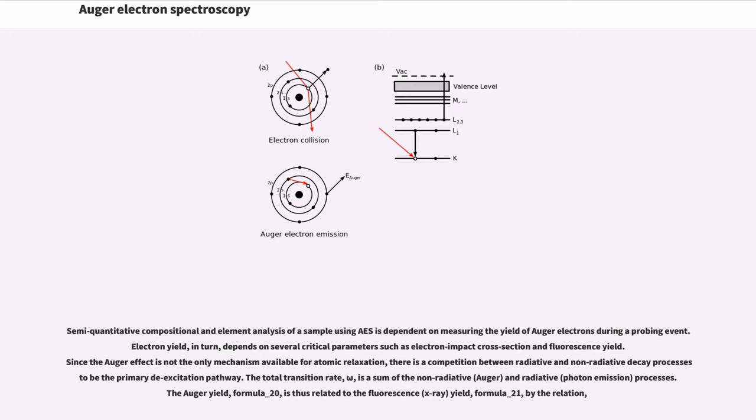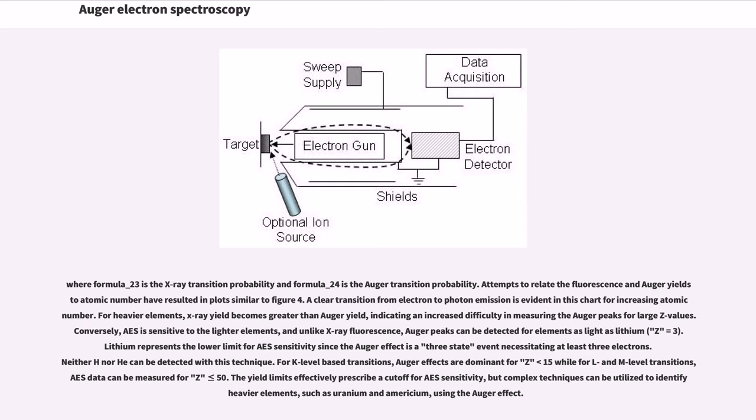The Auger yield, a_A, is thus related to the fluorescence (X-ray) yield, a_F, by the relation a_A = 1 - a_F. Where Γ_X is the X-ray transition probability and Γ_A is the Auger transition probability. Attempts to relate the fluorescence and Auger yields to atomic number have resulted in plots similar to Figure 4.